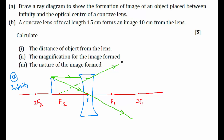These are the two refracted rays and we can clearly see that they are diverging rays. These two rays are never going to meet. So when rays are not meeting, what we need to do to trace an image? We need to extend them backwards. When you extend them back they meet at a point here, so the image will be formed here. This is our image — this is the ray diagram showing the formation of image of an object placed between infinity and the optical center of a concave lens.